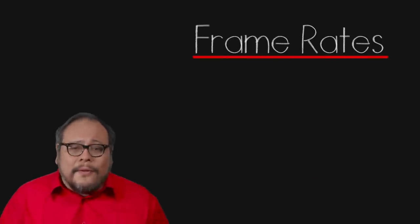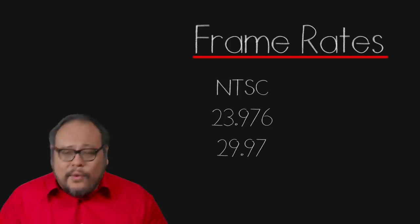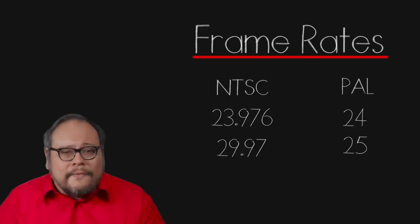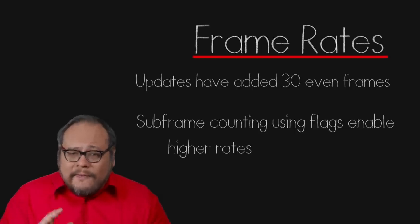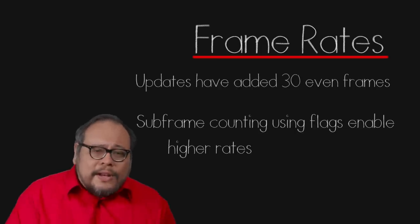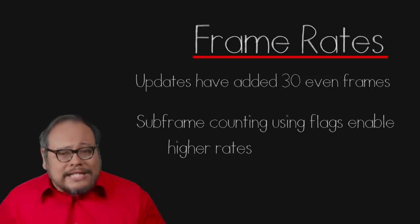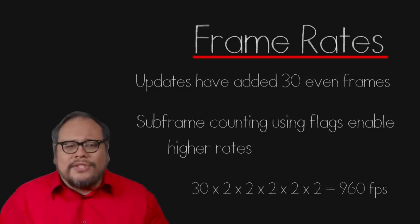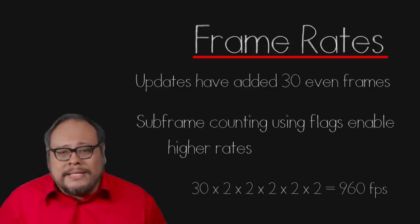Now in terms of frame rate, SMPTE originally only provided for a handful of frame rates. In NTSC land you had a choice between 23.976 and 29.97. In PAL land you had an even 24 or 25. An update to the SMPTE timecode has added the ability to count subframes by using up to 5 flags, which allows timecode to count 32 times the super frame rate. So the maximum frame rate possible now is 32 times 30, or 960 frames per second. Of course these extra frame rates are not widely implemented — the highest I've seen are 59.97 and 60.